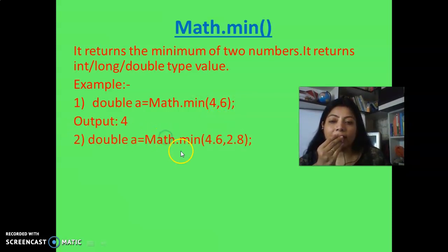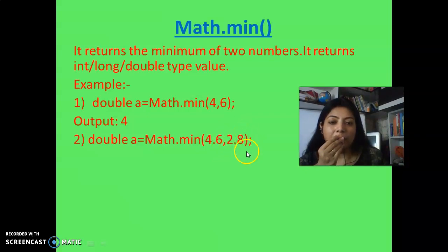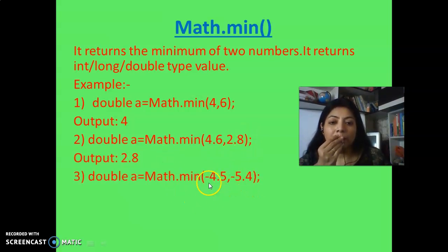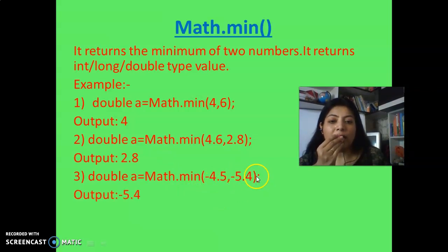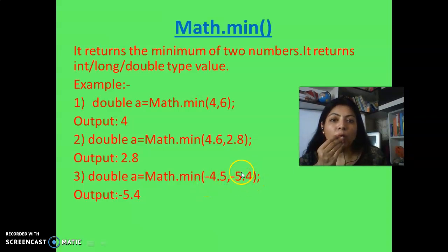Let's take another example with a fractional number: Math.min(4.6, 2.8). You can understand that 2.8 is the minimum here, so output should be 2.8. Now for a negative number: Math.min(-4.5, -5.4) — obviously -5.4 is less than -4.5, so the minimum is -5.4. Again, be careful when you get any negative number.